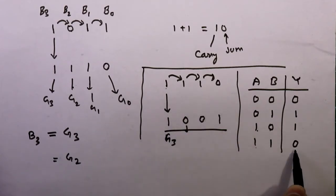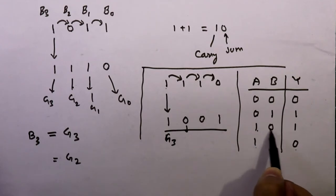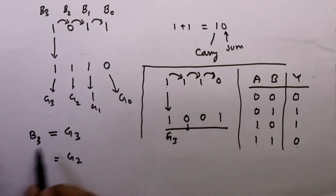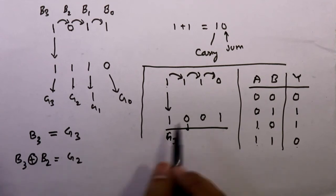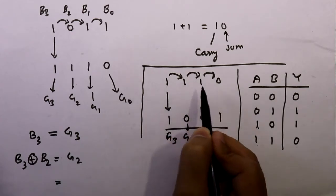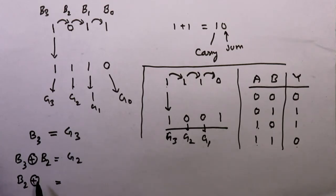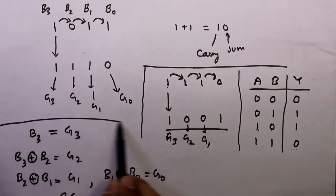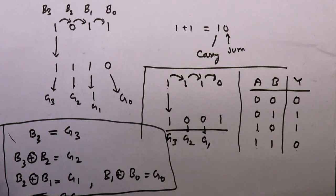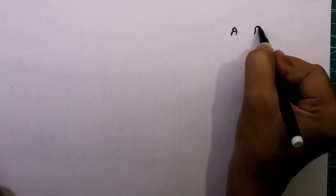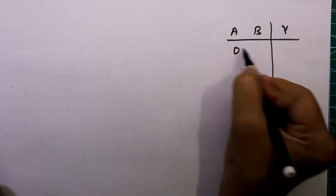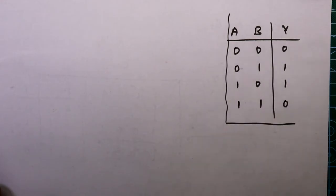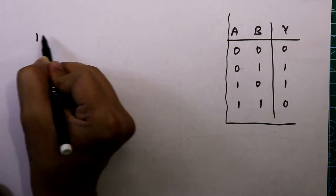To get G2: 1 XOR 1 gives 0 and 1 XOR 0 gives 1, so G2 = B3 XOR B2. To get G1: G1 = B2 XOR B1. To get G0: G0 = B1 XOR B0. These are the XOR equations for our practical circuit. Let me also write the XOR truth table where A and B are inputs and Y is the output.